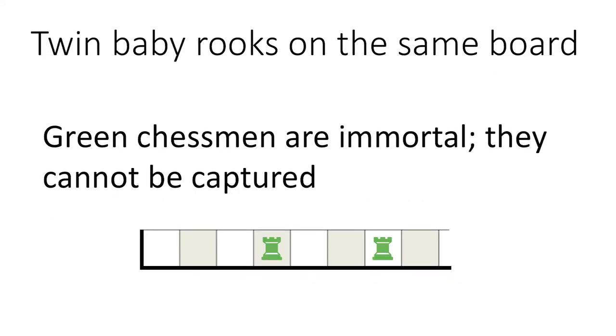Let's next consider the game of twin baby rooks. They occupy different locations, but since they are twins, they reside on the same board. Like all impartial green chessmen, they are immortal. They cannot capture or be captured, nor can they jump over one another.